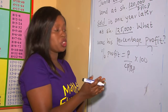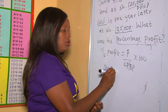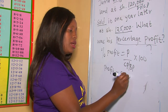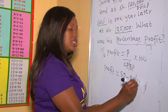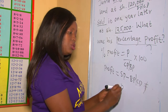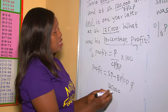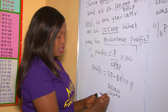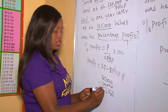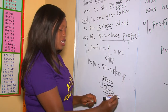To get the profit: profit equals selling price take away buying price or cost price. The selling price is 125,000 and our cost price is 120,000. Taking away, zero minus zero is zero, five minus zero is five, zero minus zero is zero. So the profit is 5,000.